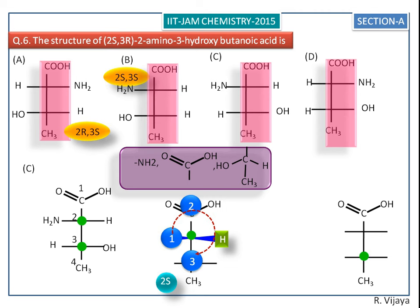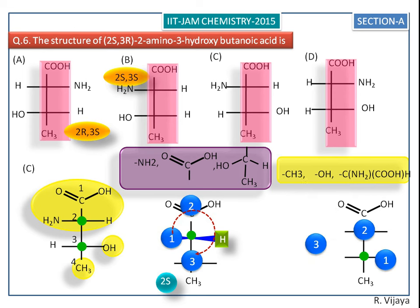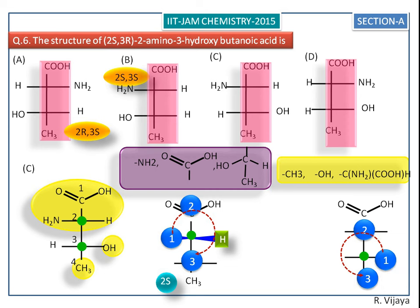Next we assign the configuration for the third chiral center. The higher priorities rotate in an anticlockwise direction, so it is supposed to be 3S, but it is not, because the least priority hydrogen is towards the observer, so we change S into R. The overall configuration for the C molecule is 2S and 3R, which matches the 2S,3R-2-amino-3-hydroxybutanoic acid asked in the question.